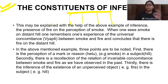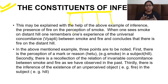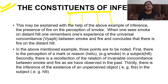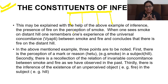Constituents of inference — this is also important, which is why we make a chart. It may be explained with the help of the above example: the presence of fire inferred from the perception of smoke. When one sees smoke on a distant hill, one remembers one's experience of the universal concomitance — that is vyapti — between smoke and fire, and concludes that there is fire on the distant hill.